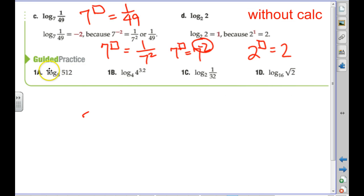Moving on to our guided practice here. Yikes. I don't know if I would be mean enough to put that on a quiz, but 8 times 8 is 64. 64 times 8? Yeah, I'm thinking so. So, this is 3. This means 4 to what power equals 4 to the 3.2? 3.2.